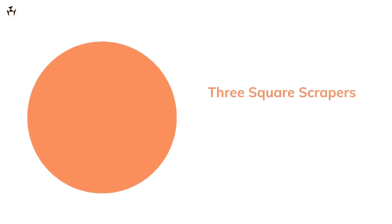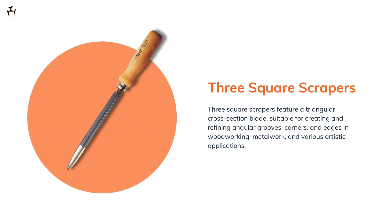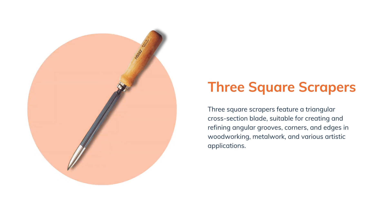Three-square scraper is shaped like a triangle. Along with this, it has three sharp edges, which is why it is also called a triangular scraper. This tool is used to sharpen the edges of bush bearings and to scrape the inner spherical surface.